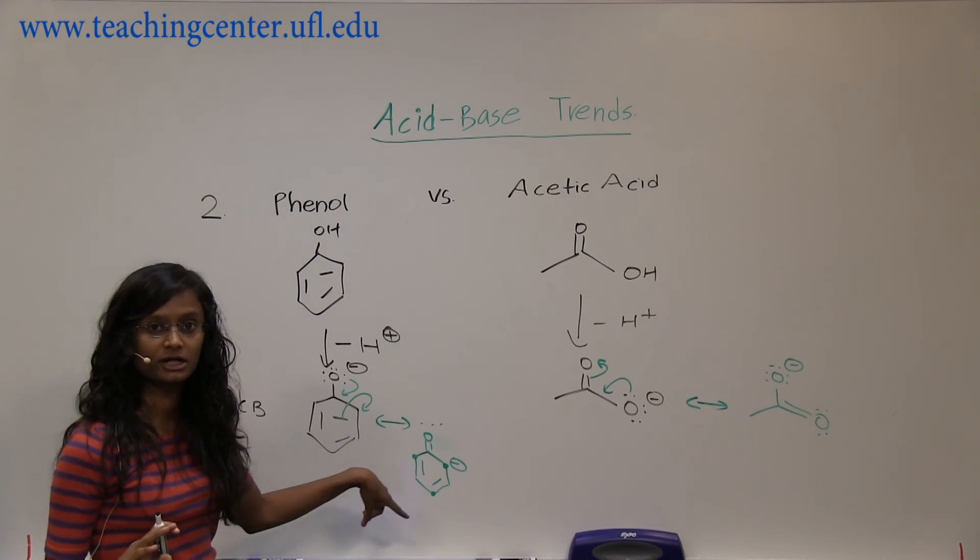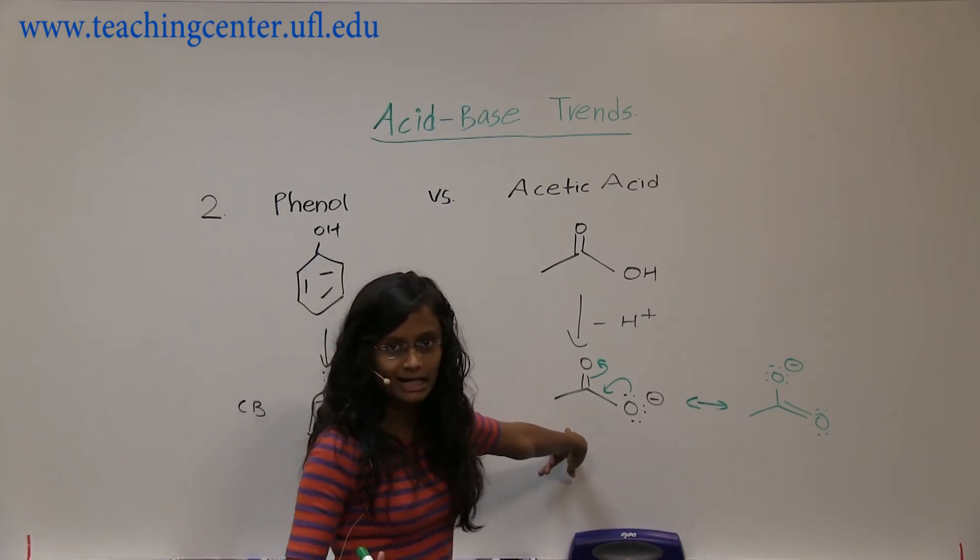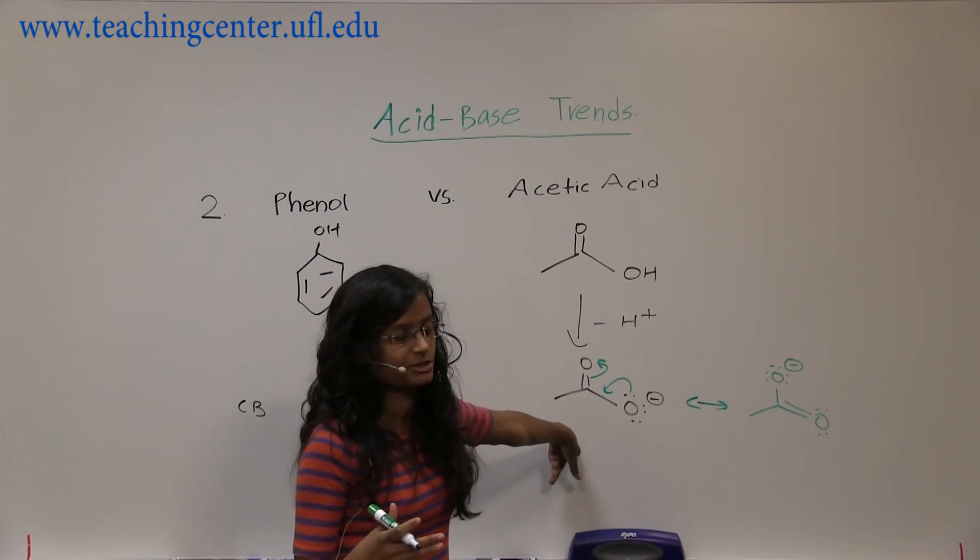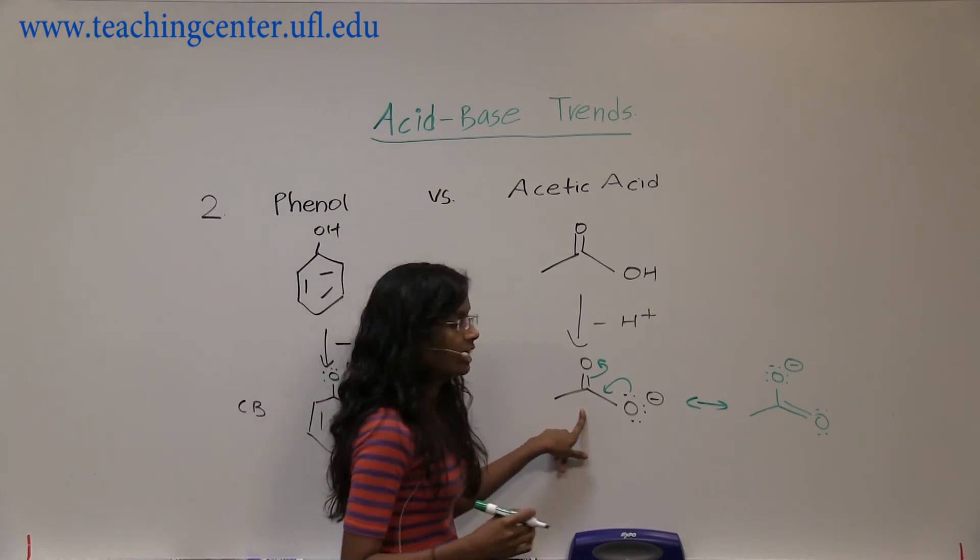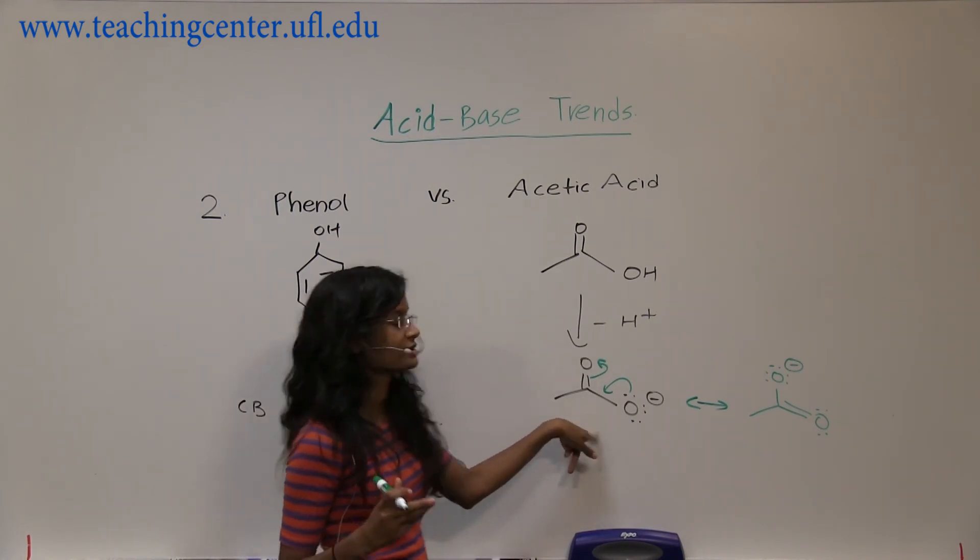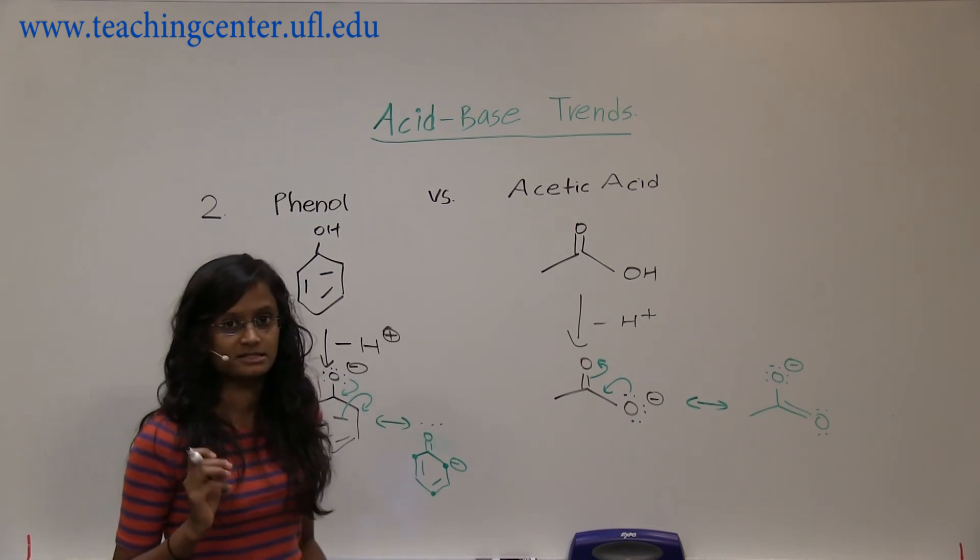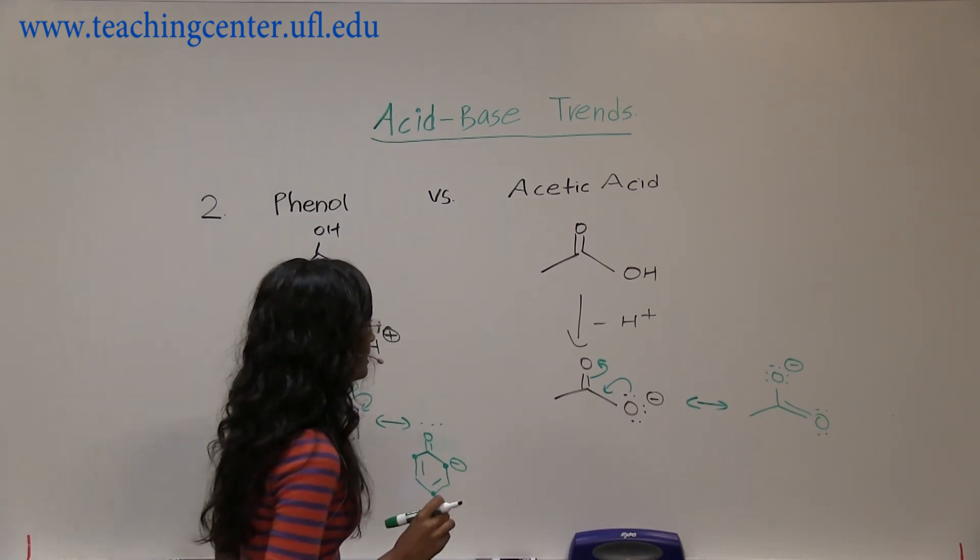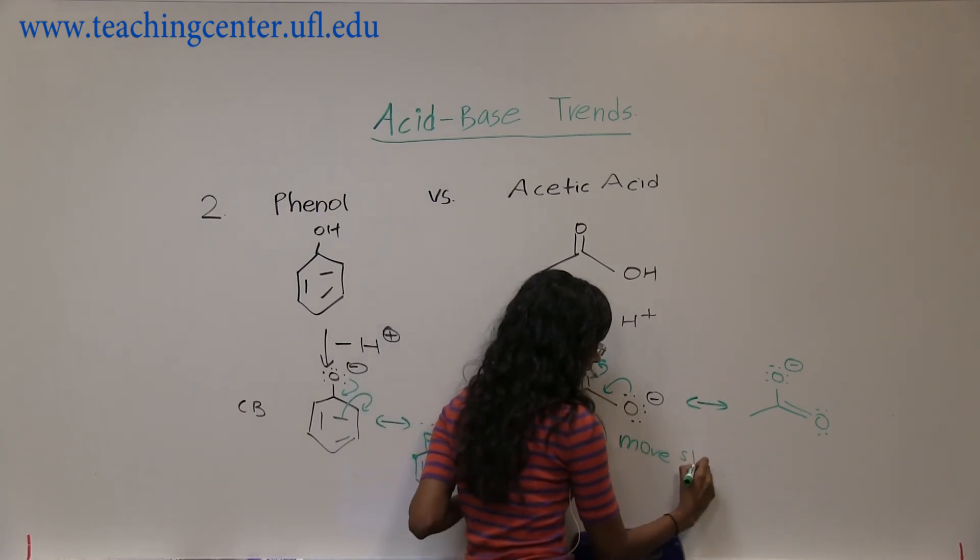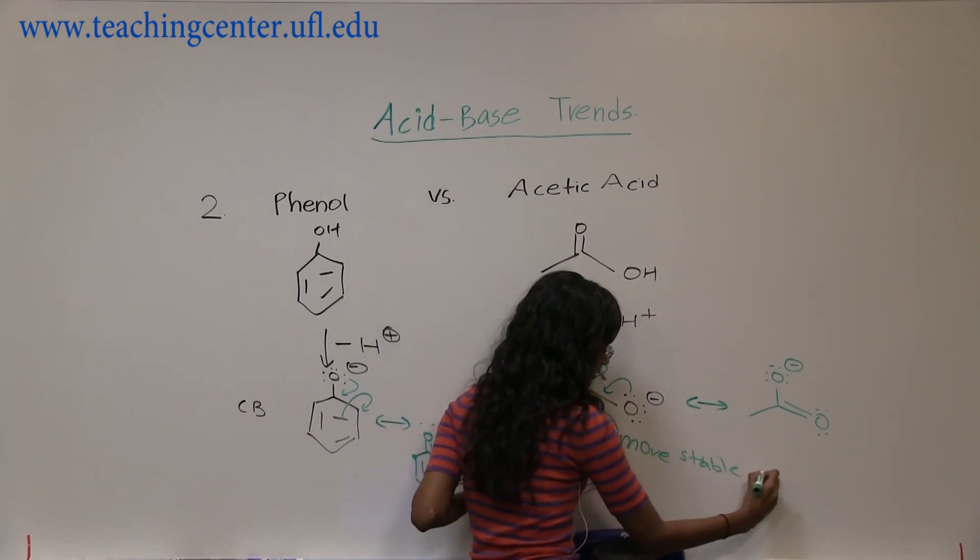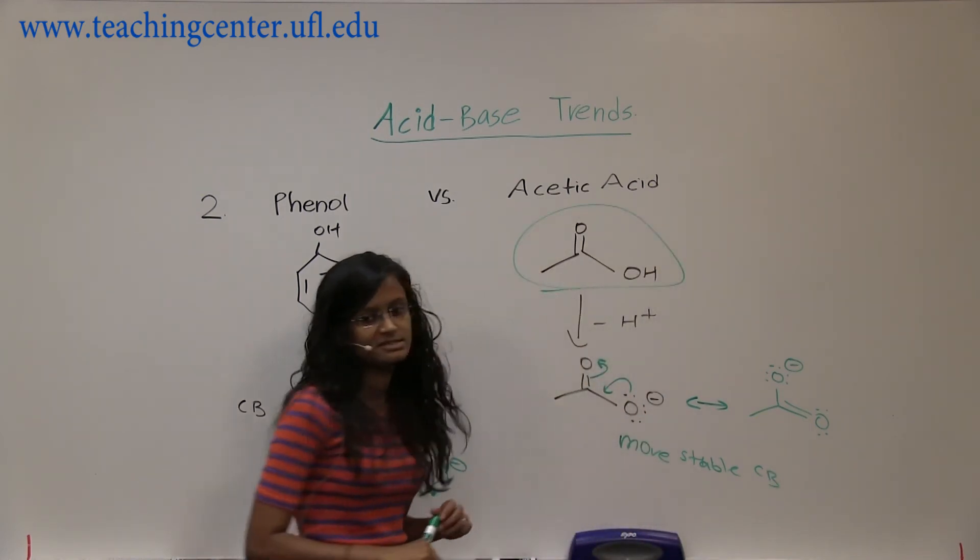So even if you have four structures here, these will be more contributors—like higher contributors to your resonance structures than these ones—because this one has oxygen containing the negative charge and in this one carbon is containing the negative charge. So that is the difference between the two.